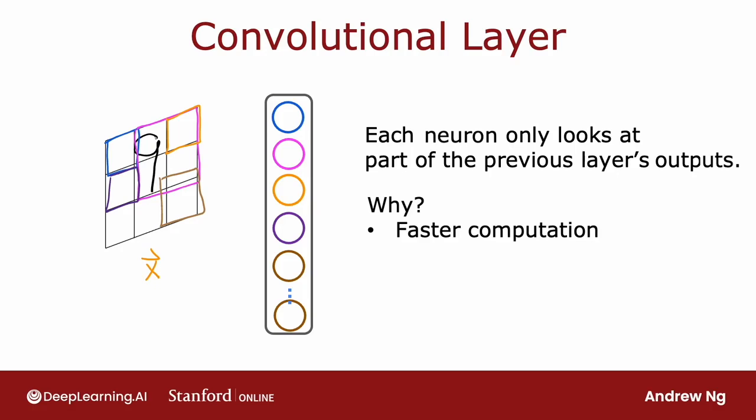And the second advantage is that a neural network that uses this type of layer, called a convolutional layer, can need less training data, or alternatively, it can also be less prone to overfitting. You've heard me talk a bit about overfitting in the previous course, but this is something that we'll dive into greater detail on next week.